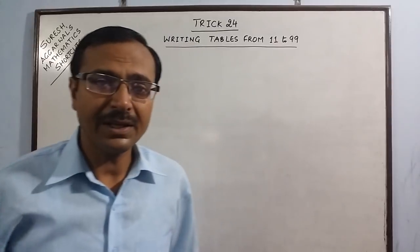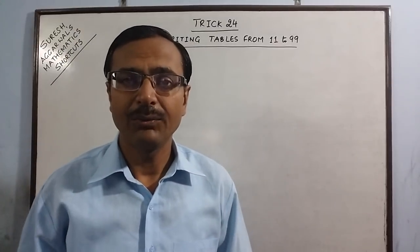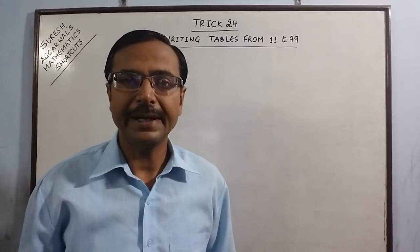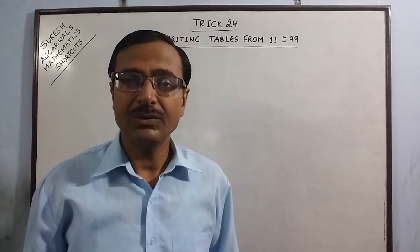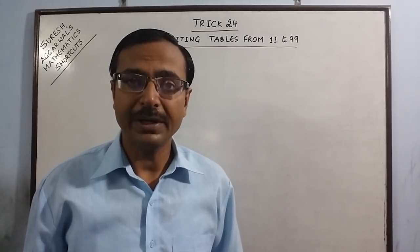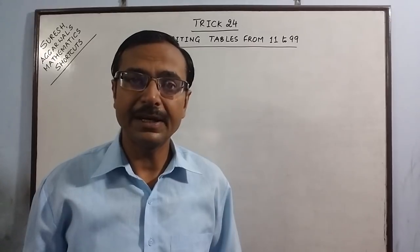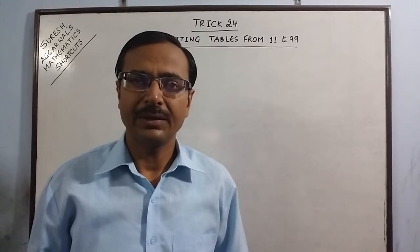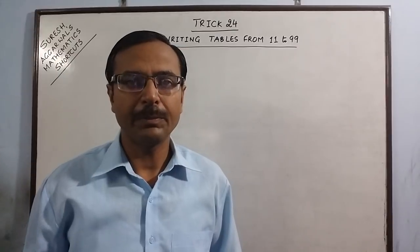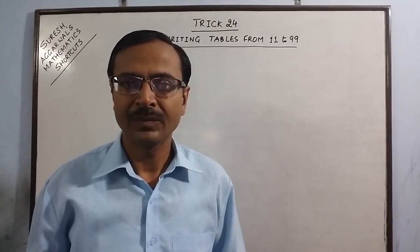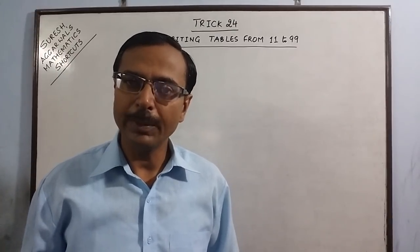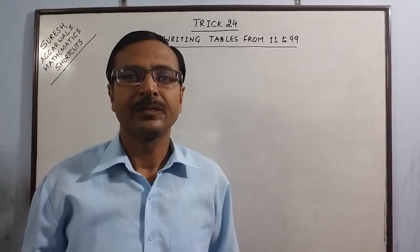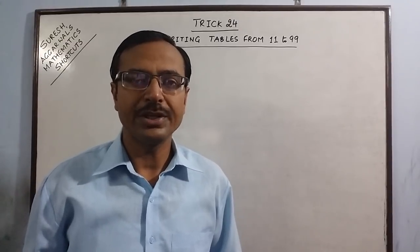The basic thing we require for writing the tables of 11 to 99 is that we should remember the tables of all single digit numbers, which is very easy and students normally remember the 2 to 9 tables. So if you remember these 8 tables, you can write the table of any 2-digit number.